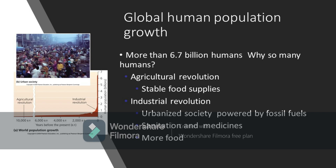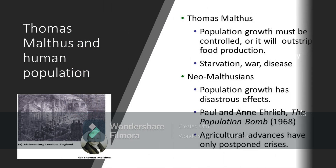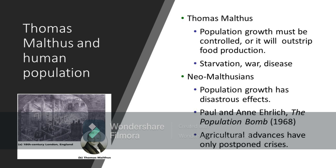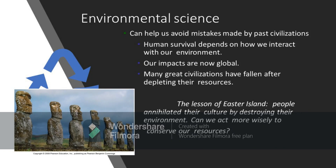The world population is increasing — more than 6.7 billion humans. Thomas Malthus said population growth must be controlled or it will outstrip food production, and this may also lead to starvation, war, and disease. Population growth has disastrous effects, based on neo-Malthusian ideas. Human survival depends on how we interact with our environment. Our impacts are now global. Many great civilizations have fallen after depleting their resources — look at the lesson of Easter Island. People annihilated their culture by destroying their environment. The question is: can we act more wisely to conserve our resources?